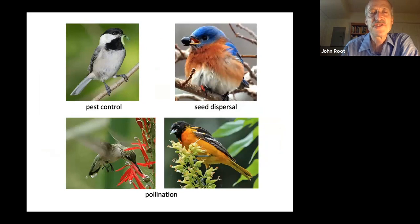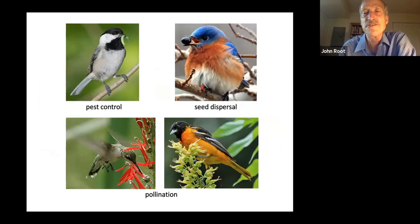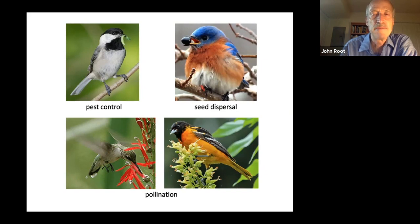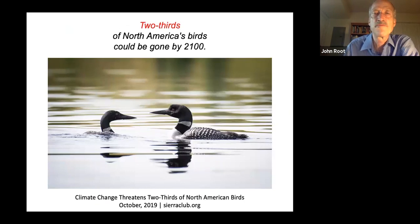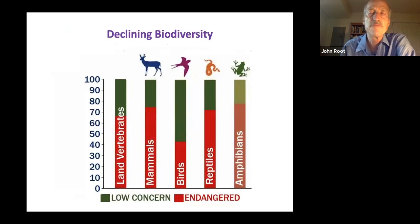Now we're going to start talking about birds — we can consider them beneficial organisms because they are predators, the first of those P's. They also perform seed dispersal, which is a benefit to plants themselves. The only two birds that I'm aware of that do pollination here in New England are the ruby-throated hummingbird and the Baltimore Oriole. Bird populations have declined alarmingly since 1970 by 30%, and two thirds of our birds will be gone by the end of the century if global warming and other factors continue as they presently are.